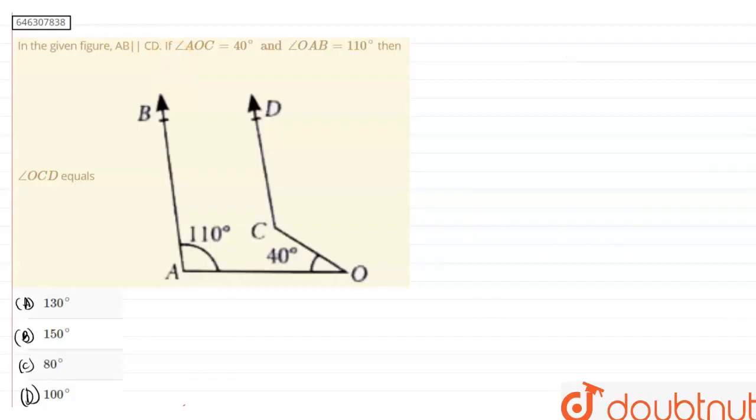So in this question, it is given that AB is parallel to CD, angle AOC is given as 40 degrees and angle OAB is given as 110 degrees. Then we have to find the angle OCD.